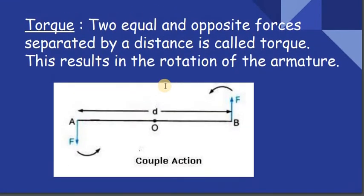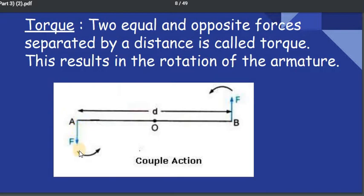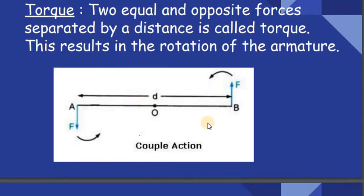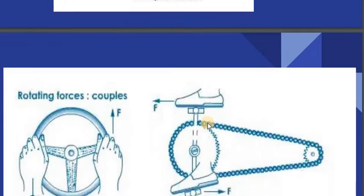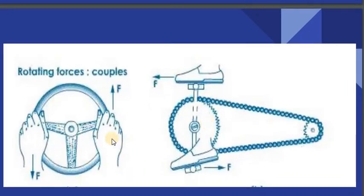Now we'll see torque. When two equal and opposite forces are acting at a separate distance, we call it as torque. In this picture you can see a force acting in the upward direction and this one acting in the downward direction, separated by a distance d. When these two forces are equal there will be a rotation — this is what we call torque. Examples of torque include when you are using your steering wheel and when you are pedaling your cycle.